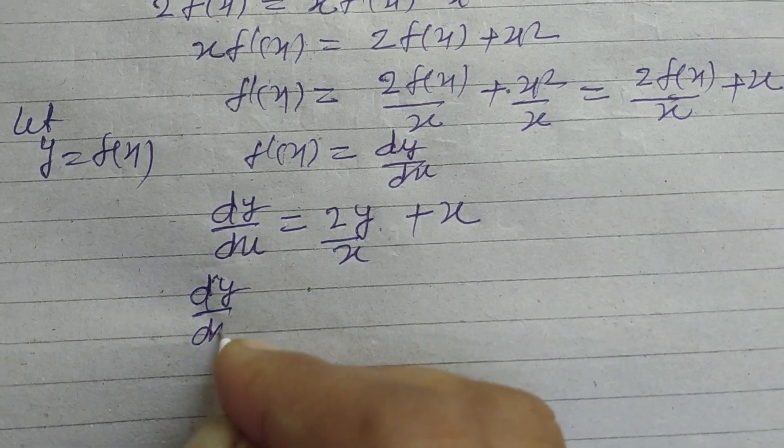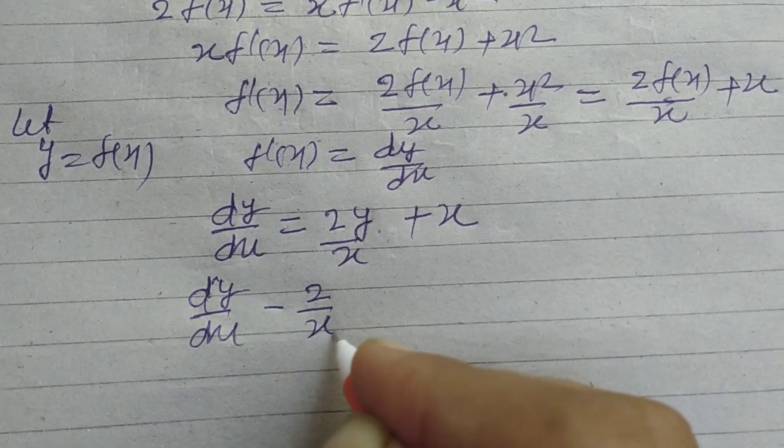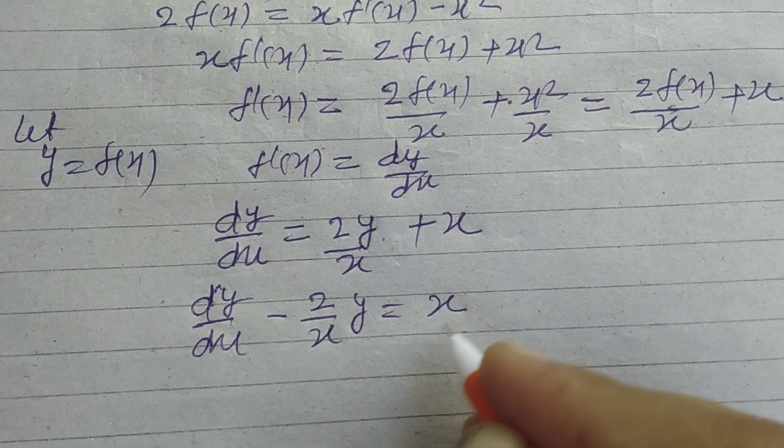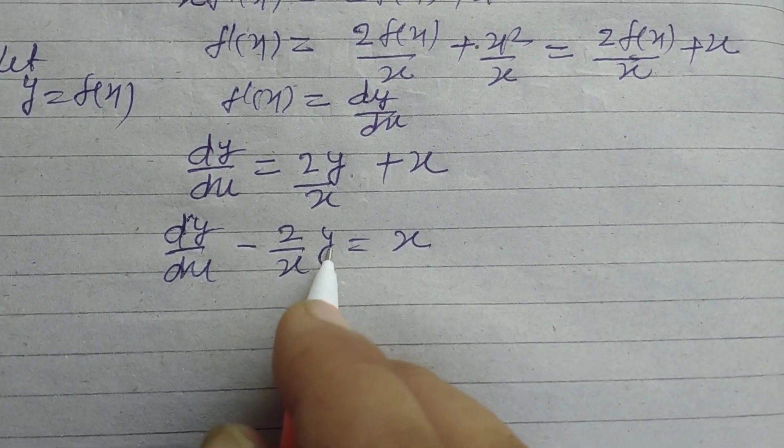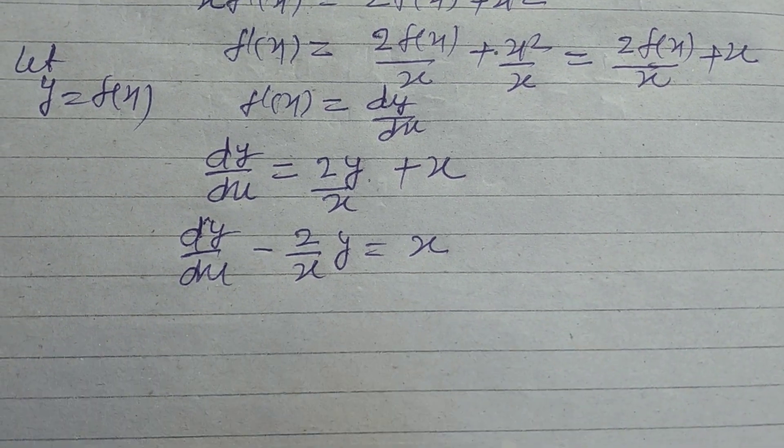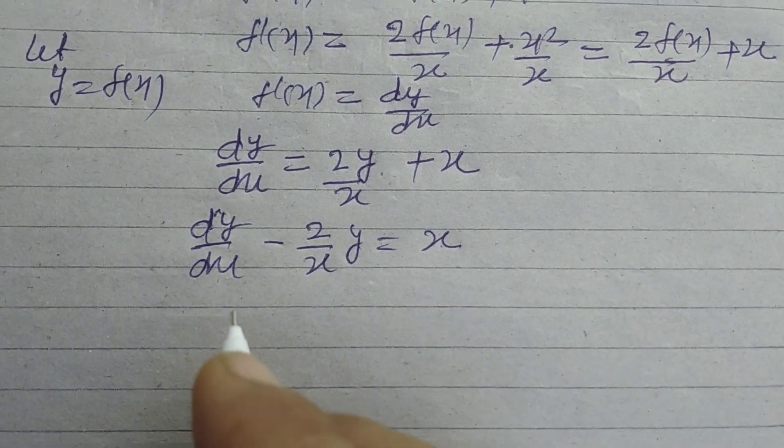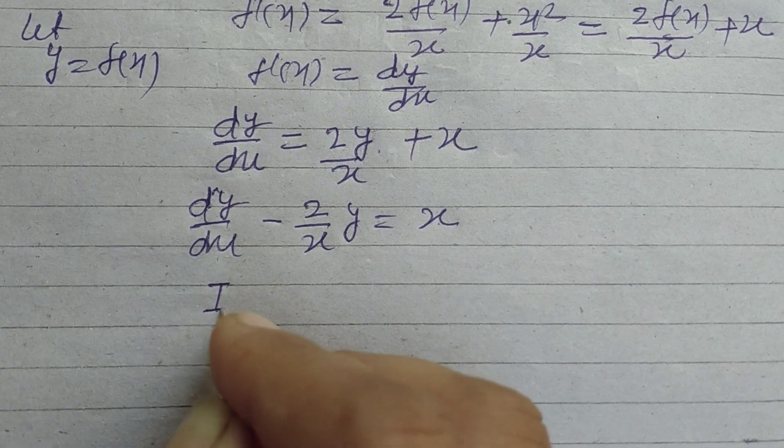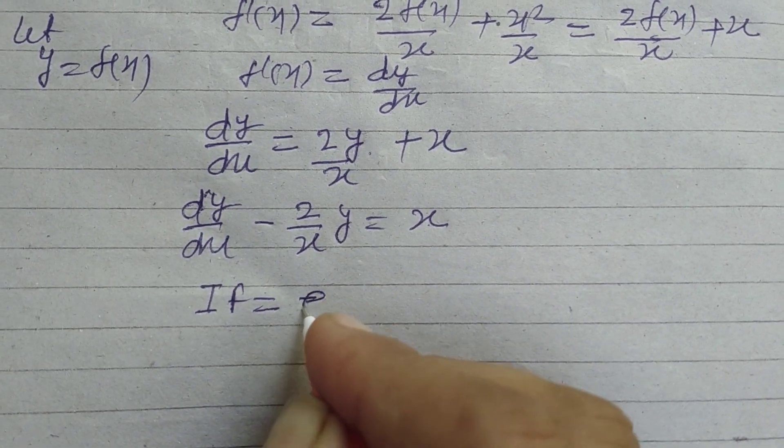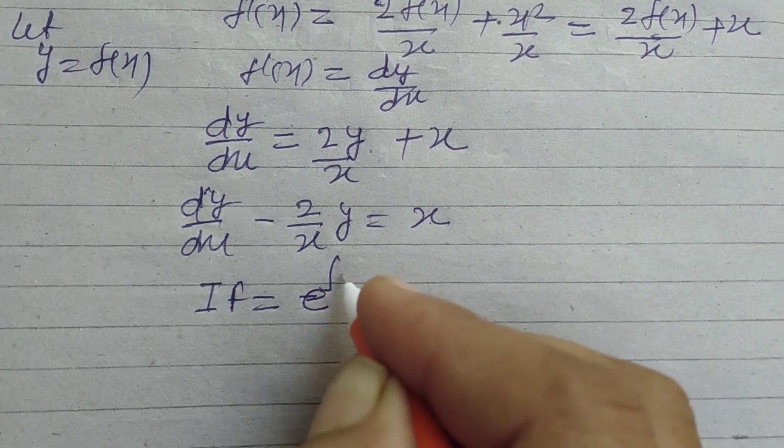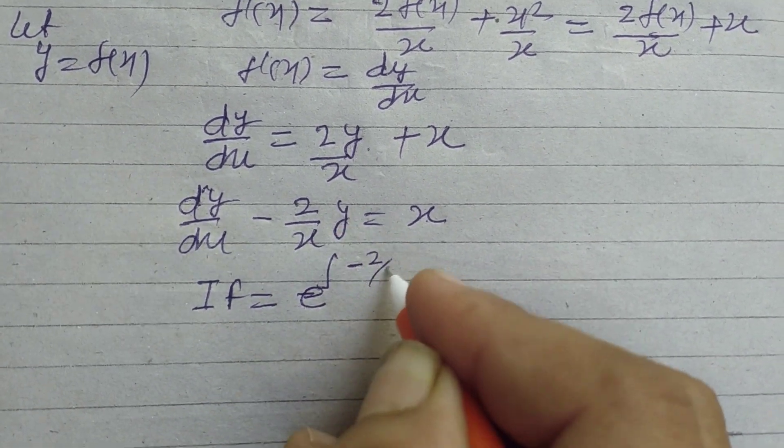dy/dx - (2/x)y = x. This is the type dy/dx + P·y = Q. So here integrating factor is e^∫(-2/x)dx.